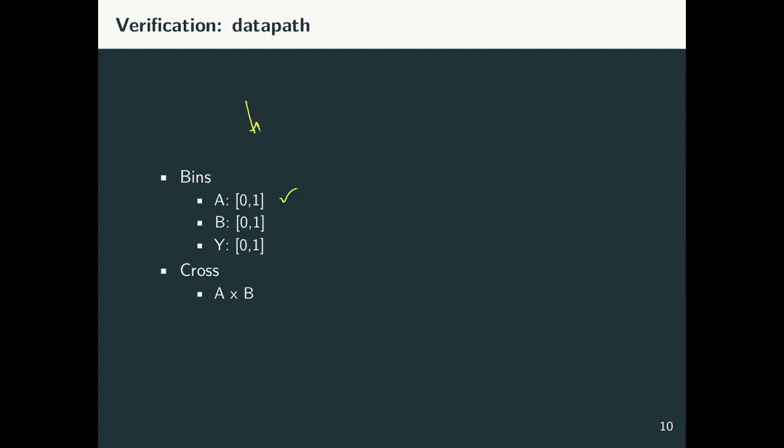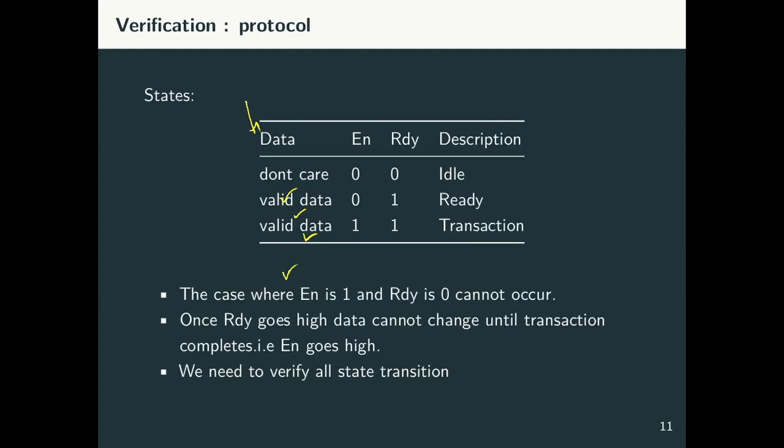The other component in my verification plan is a list of all my bins and coverage. In this case, I am saying that my bins are A, B, and Y with cross of A and B. I am defining that I have these three states on my protocol interface, idle, ready, transaction. And if you look at our protocol, we have these three phases. And we could transition from here to here, here to here, and here to here. We also could transition directly over here. And we also have a path from here to here. One of our verification goal is to ensure that we cover each one of these transitions.